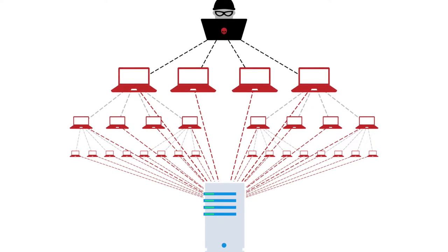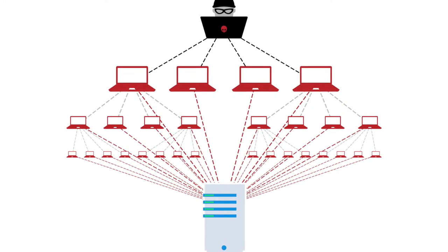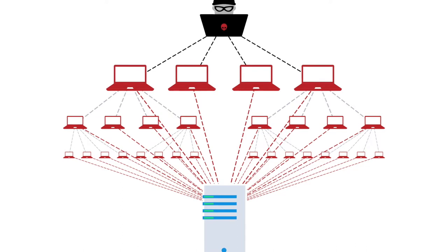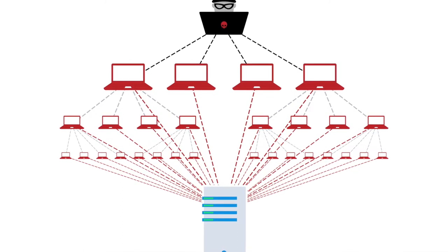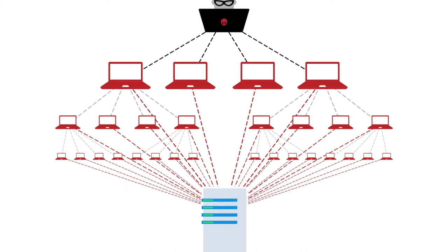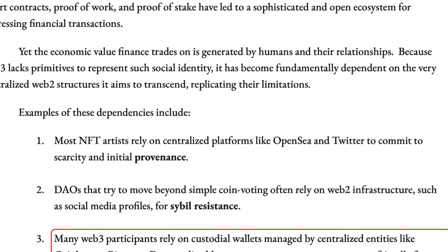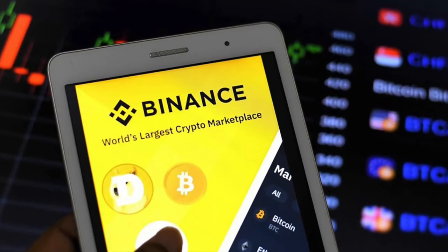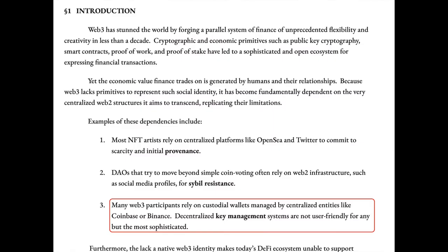In the web3 world it's quite easy to create multiple wallets, and there is no way to know if a single person holds all of them. I'll link a Wikipedia article in the description where you can read more about Sybil attacks. Third, many people still use Coinbase and Binance to store their coins, and current decentralized solutions like keeping coins in a hardware wallet are not user-friendly and have a bit of a learning curve. We will discuss how soulbound tokens could help solve this problem.